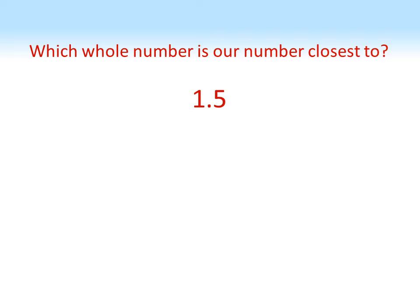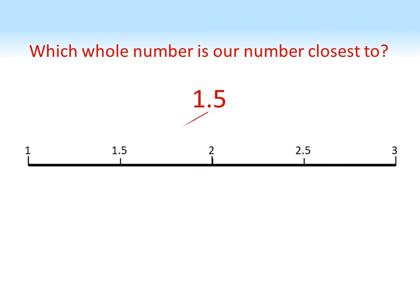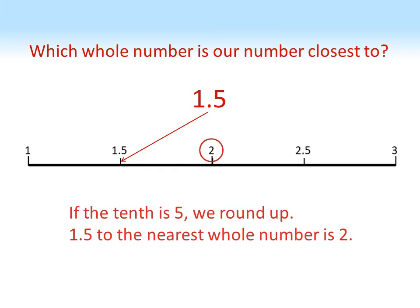Let's try it again but this time with 1.5. If we put this on our number line, there's 1.5, and that's halfway between 1 and 2. But our convention is that if it's 0.5 we round up, so 1.5 to the nearest whole number is 2.